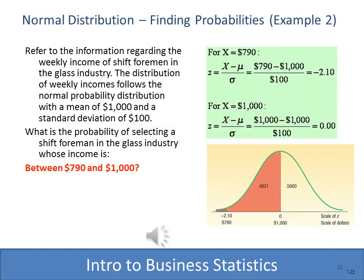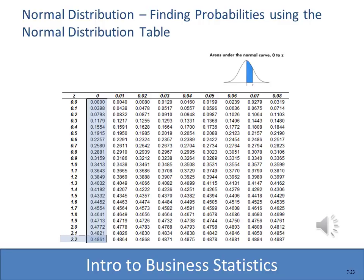Let's go back to our construction worker example with the foreman. With a mean of 1,000 and a standard deviation of 100, what is the probability of selecting a foreman whose income is between 790 and 1,000? We compute Z as (790 minus 1,000) divided by 100, giving -2.1. Looking up -2.1 in the Z table, we get a probability of 0.4821.